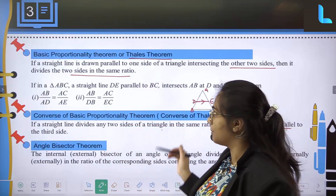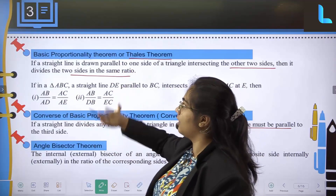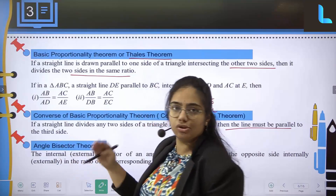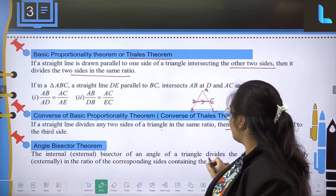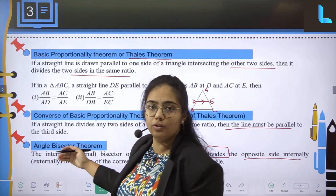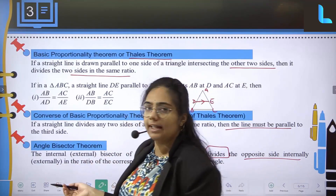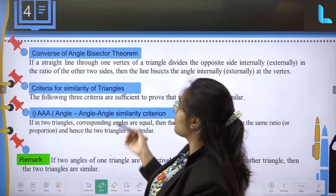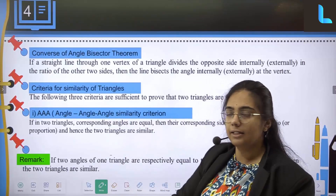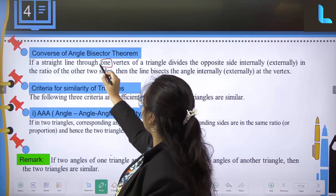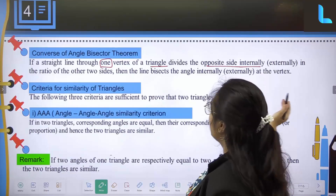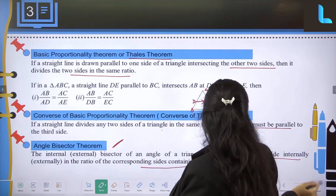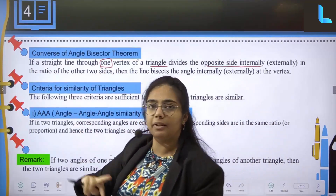The next theorem is the angle bisector theorem. From an exam point of view, you can expect any one of these theorems for a 5-marker. The internal or external angle bisector of a triangle divides the opposite side internally or externally in the ratio of the corresponding sides containing the angle. The converse of the angle bisector theorem is just the opposite: if a straight line through one vertex divides the opposite side in the ratio of the other two sides, then it is the angle bisector.